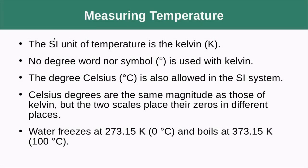For temperature, the SI unit of temperature is Kelvin. There's no degree word or symbol associated with Kelvin. You just say it's 200 Kelvin. You don't say 200 degrees Kelvin, for instance. The degree Celsius is also used in the SI system. Celsius degrees are the same magnitude as those of Kelvin, but the two scales place their zeros in different places. Zero degrees Celsius is the point at which water freezes, but that's actually 273.15 Kelvin. And water boils at 373.15 Kelvin, but that's actually 100 degrees Celsius.